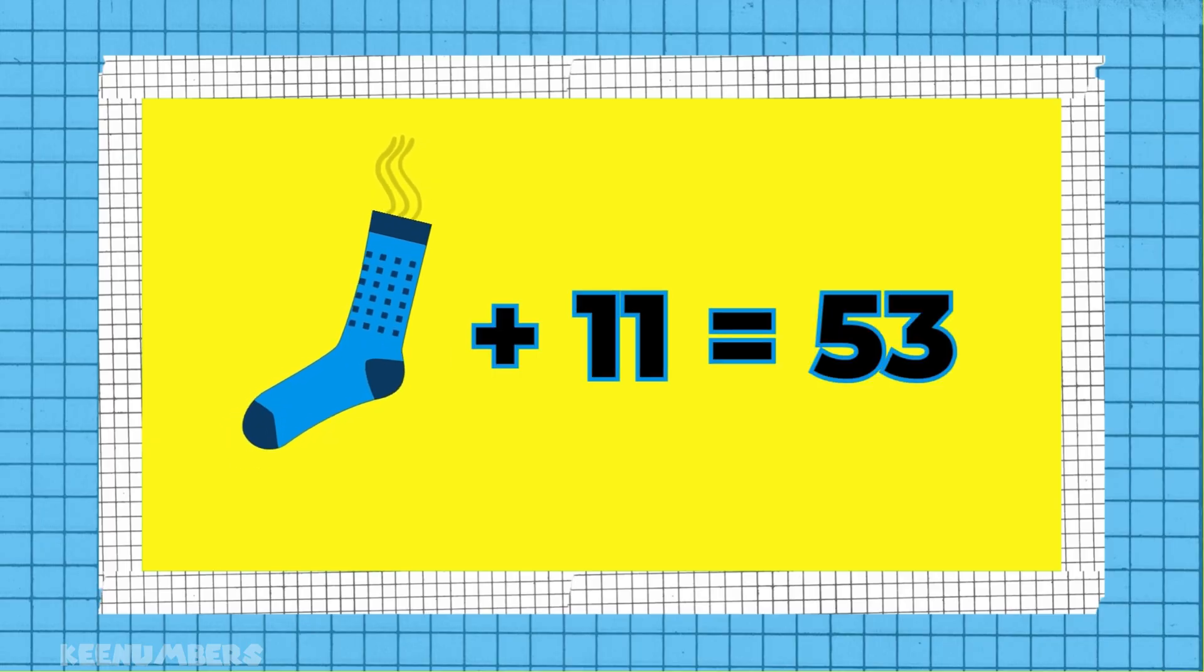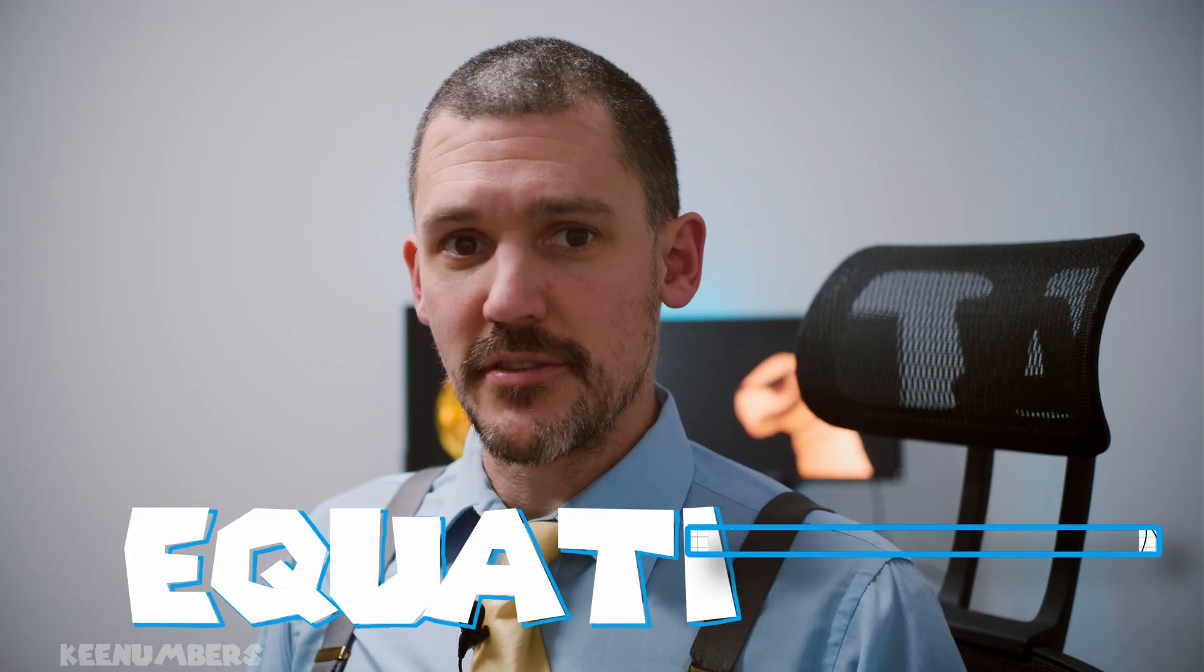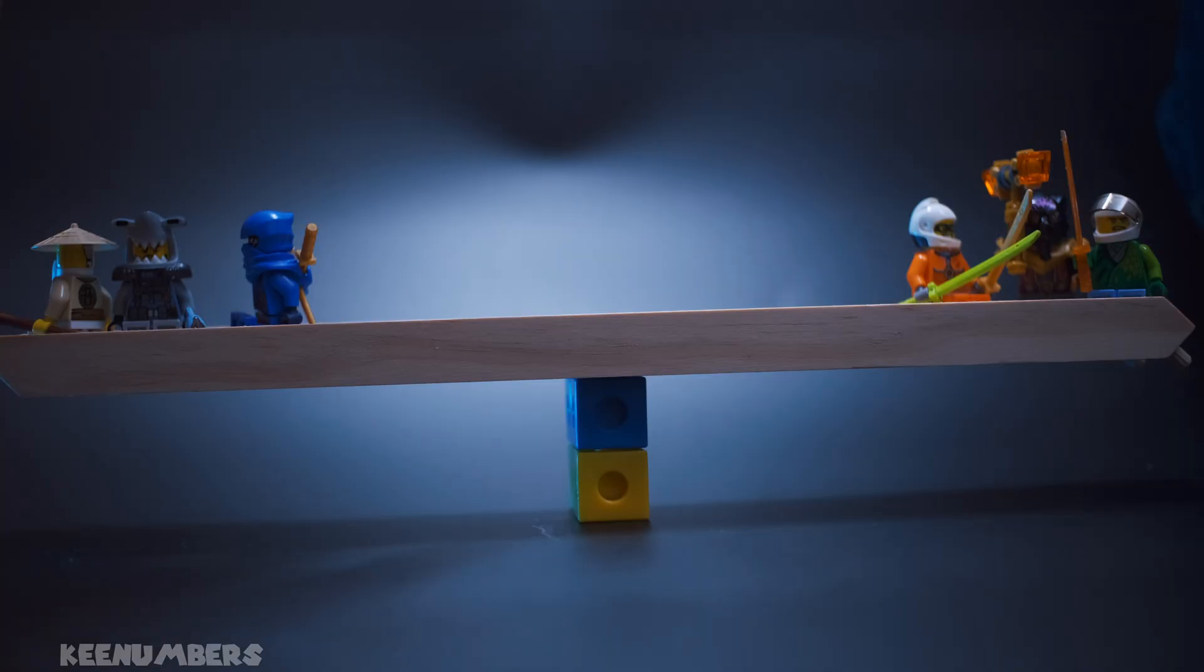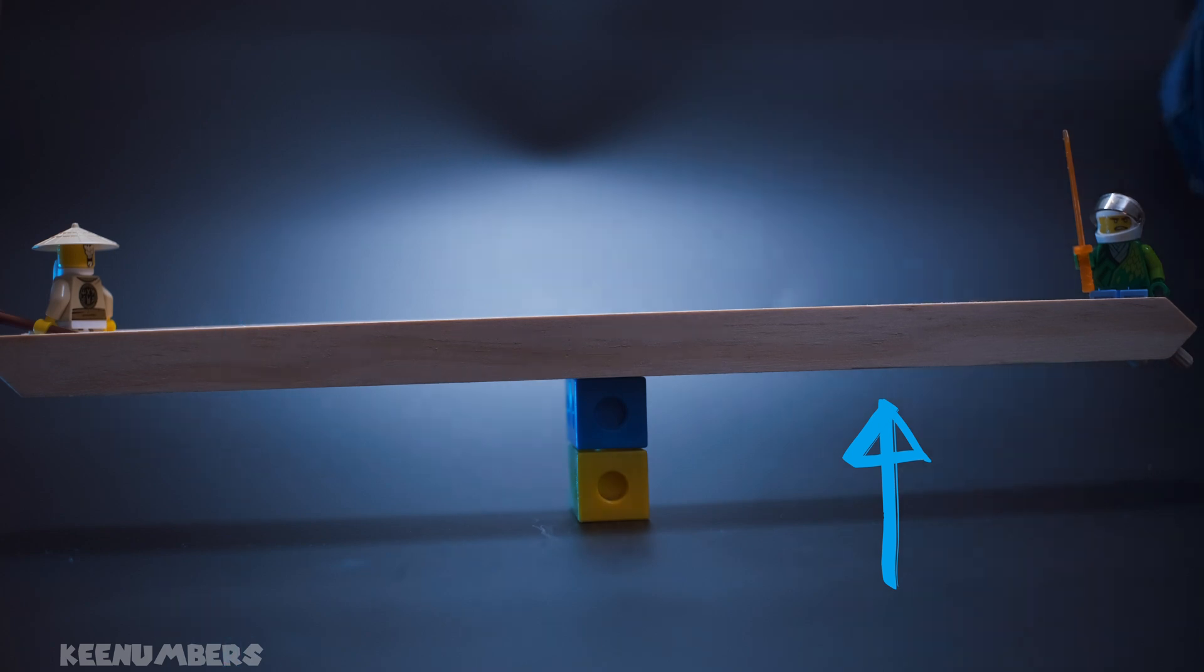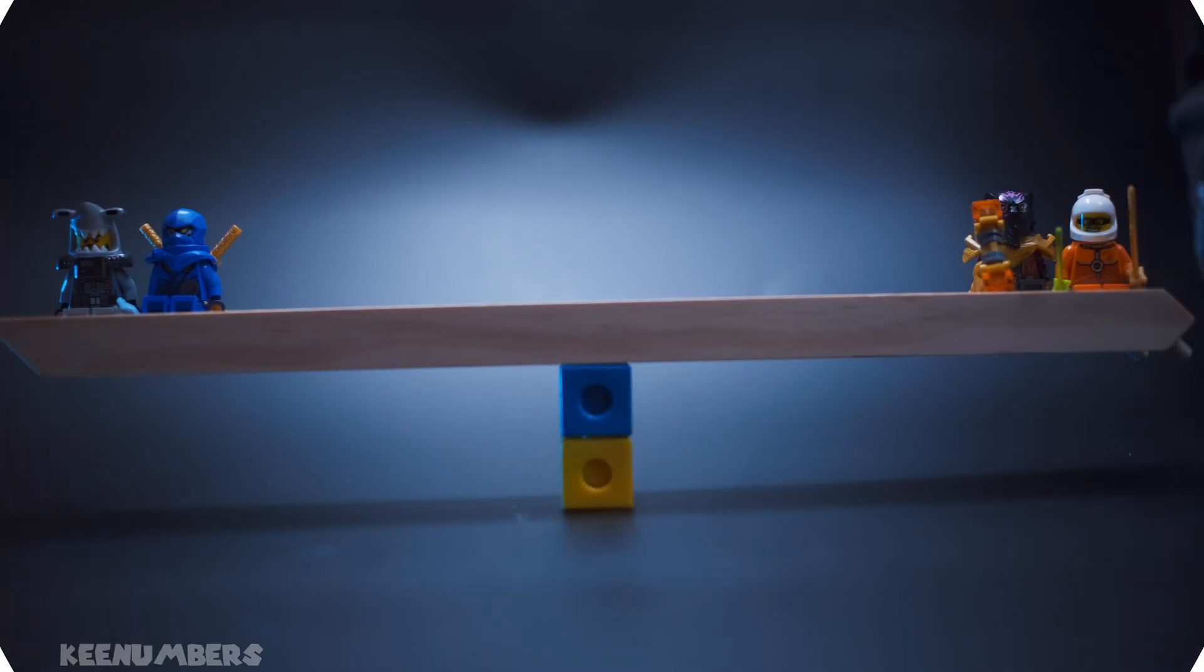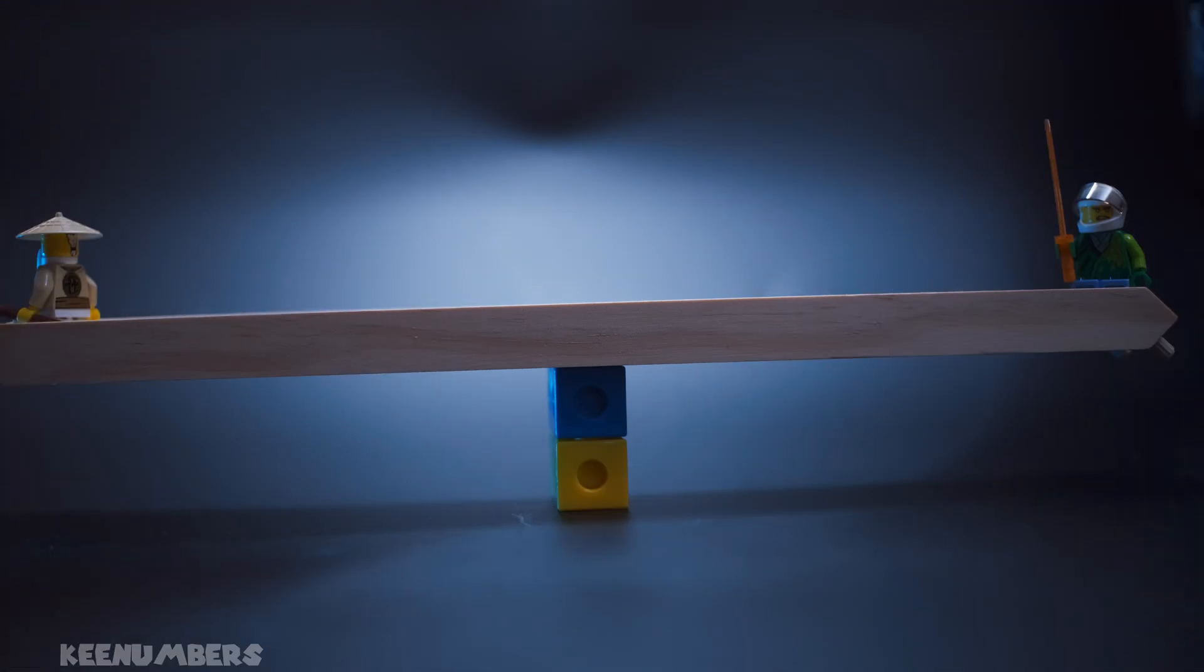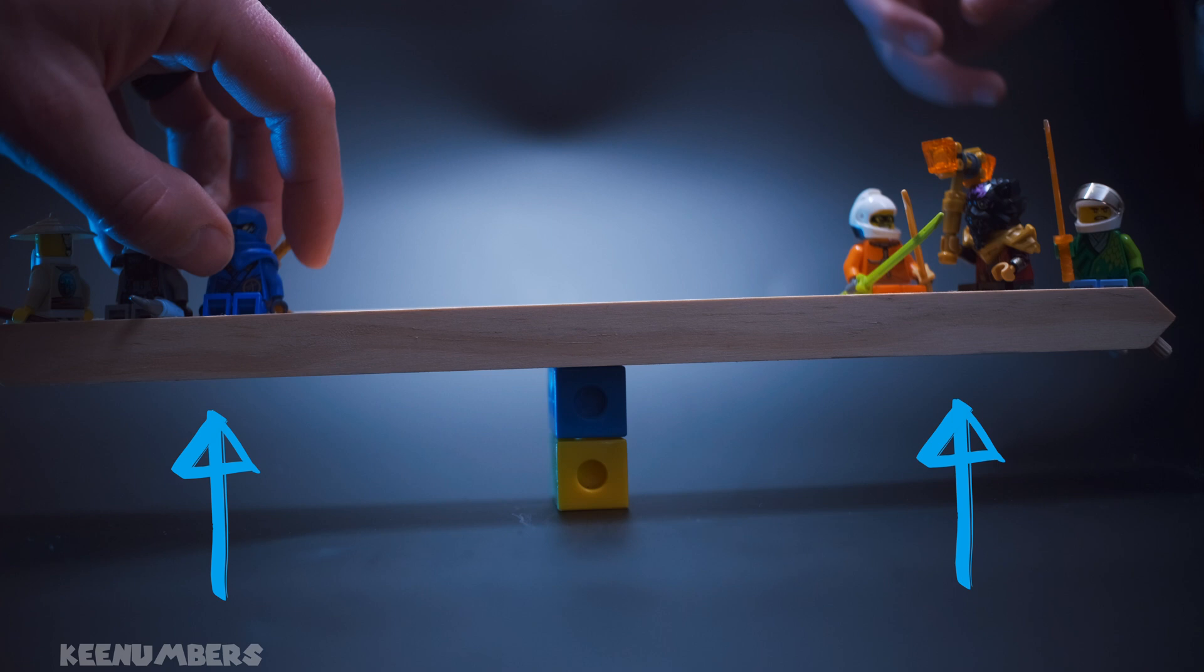One Super Sock plus 11 pounds is 53 pounds. Equations. What you do on one side, you have to do on the other. If I take away some minifigures here, I have to subtract the same amount on the other side as well. If I'm going to keep balance, if I add a minifigure to one side, I have to add a minifigure onto the other side too.